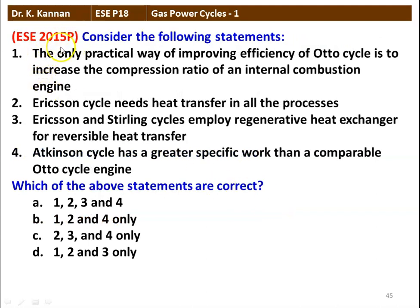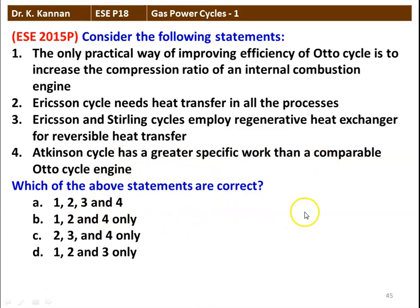The next question from the 2015 question paper. Statement 1 — the only practical way of improving the efficiency of the Otto cycle is to increase the compression ratio. Statement 2 — Ericsson cycle needs heat transfer in all the processes. Statement 3 — Ericsson cycle and Stirling cycle employ a regenerative heat exchanger for reversible heat transfer. Statement 4 — Atkinson cycle has greater specific work than a comparable Otto cycle engine. All 4 statements are correct.